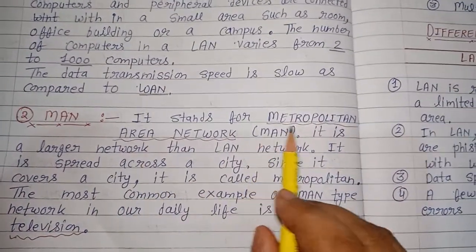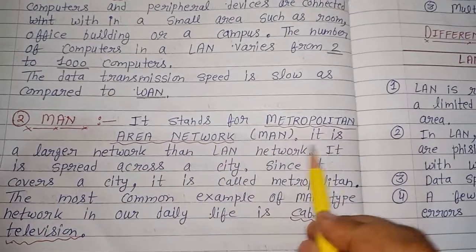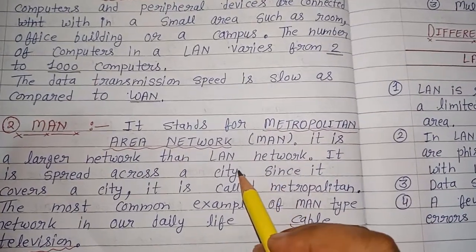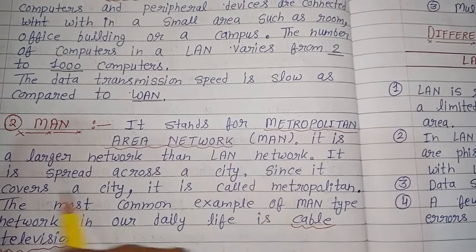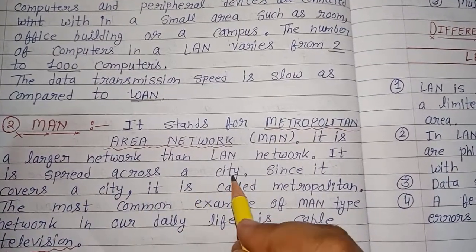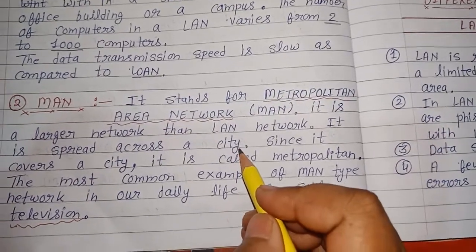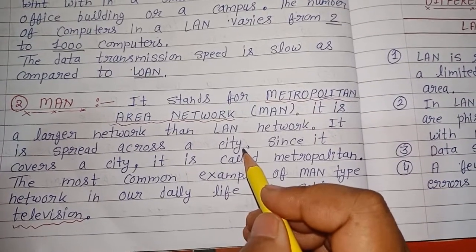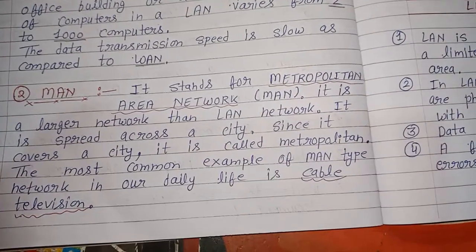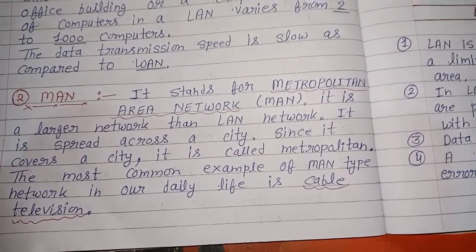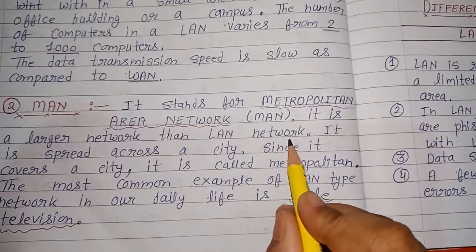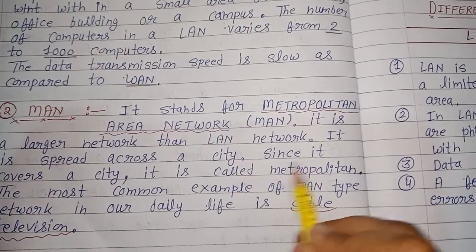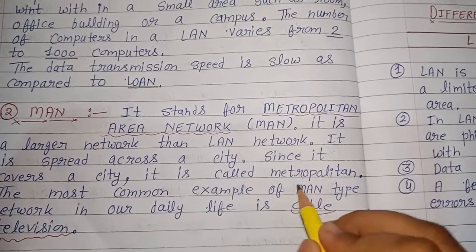Number two is MAN. It stands for Metropolitan Area Network. It is a larger network than LAN network. यह थोड़ा big network होता है local area network से. It is spread across a city, means it covers a city. It is called Metropolitan Area Network.